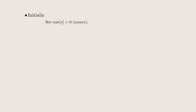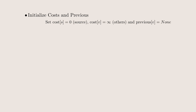First, we initialize a table to store information about the cost and the previous nodes. Initially, we set the cost to reach the source node to zero, while the cost of all other nodes is set to infinity. The previous field of all nodes is set to none.